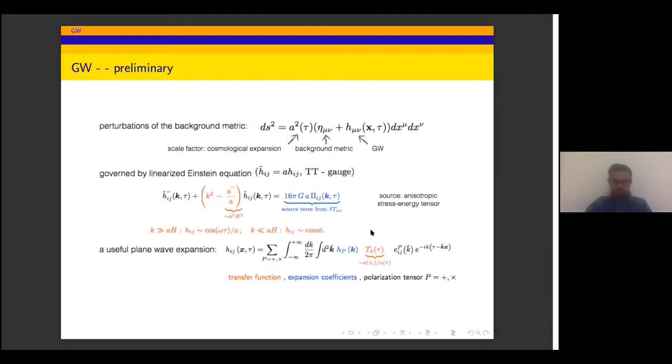Just a preliminary on gravitational wave. You write the background metric in this form, and then you perturb around it. These are your gravitational degrees of freedom propagating. And this is the equation which governs the propagation. On the right-hand side, there is some anisotropic term which acts like a viscosity and which also sources the propagation and the gravitational wave degrees of freedom. The solution looks something like this, which has the Fourier transform.